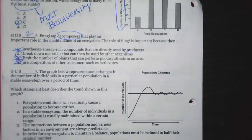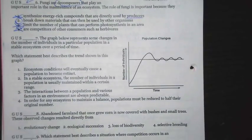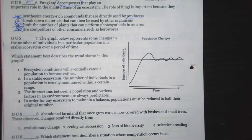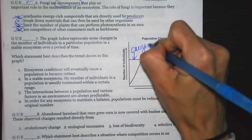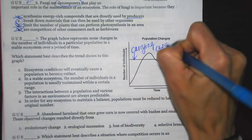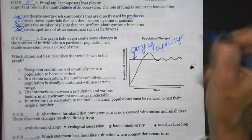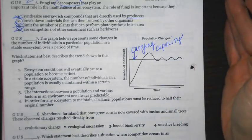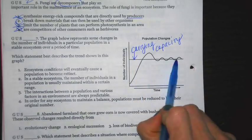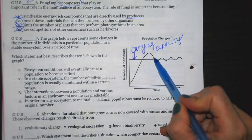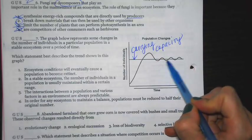The graph below represents some changes in the number of individuals in a particular population in a stable ecosystem over a period of time. Which statement best describes the trend shown in this graph? Remember, this line here represents carrying capacity. I do think it is useful to make sure you're annotating and writing all over your paper, crossing off the answers that you think are not correct. Here we have carrying capacity. Sometimes it's going to overshoot it a little bit and then go under and overshoot it and go under.